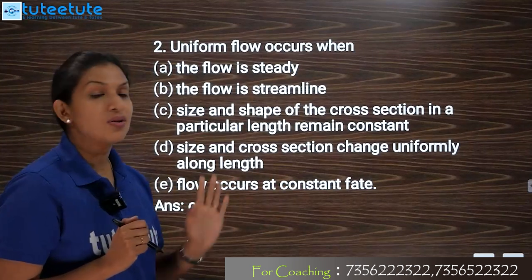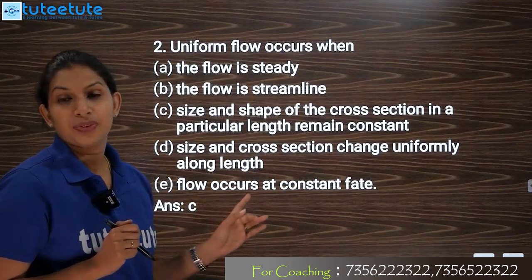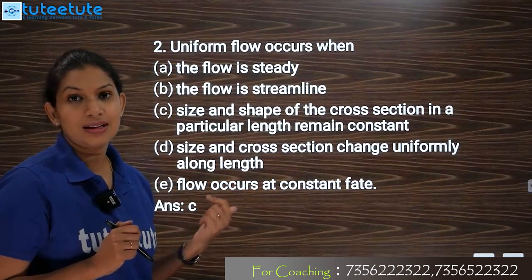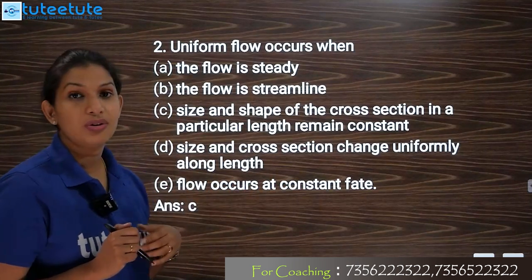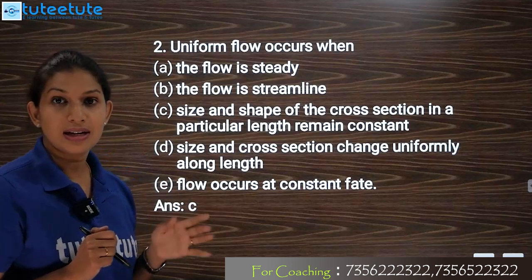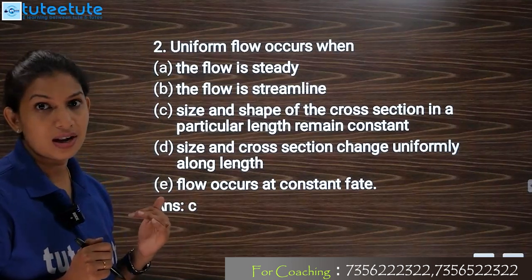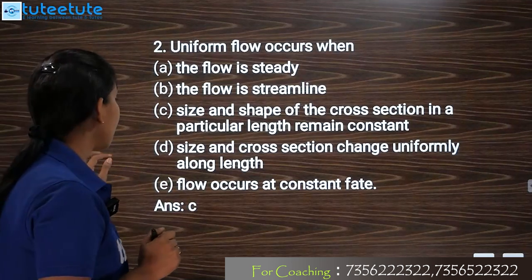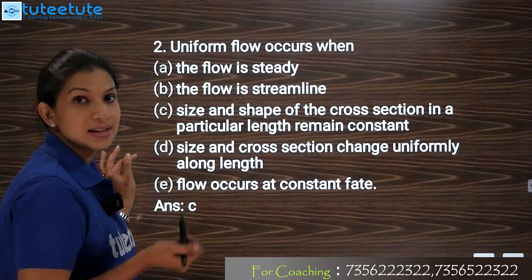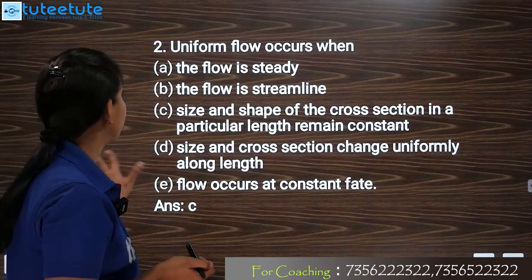And the last option — flow occurs at a constant rate — relates to uniform, non-uniform, steady, unsteady classification. So here, option C is the correct answer.